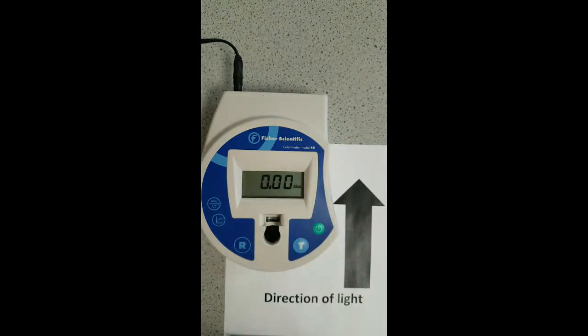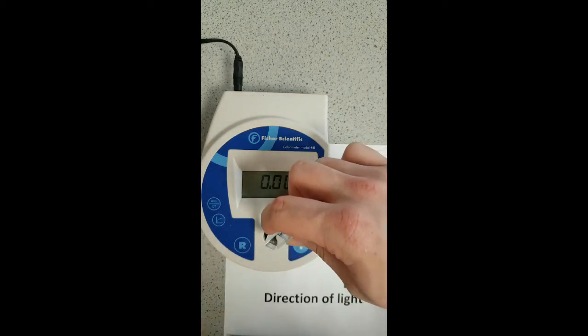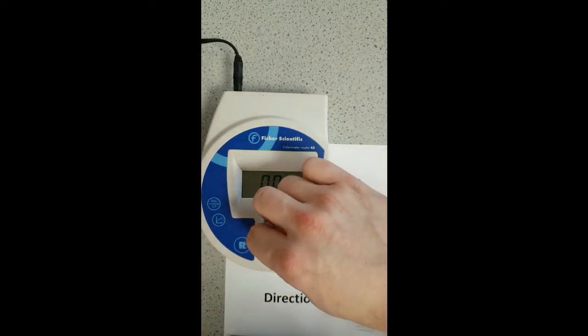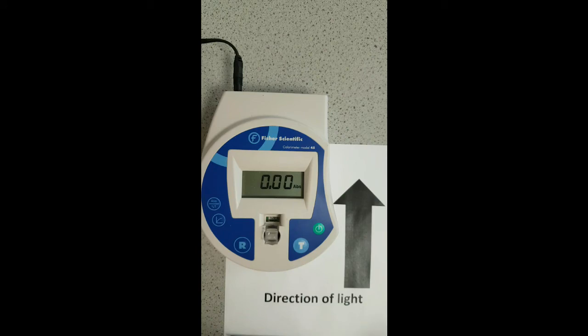Now let's run a reference sample. Remember to make sure that you orientate your cuvette so that the clear windows are facing front to back. Then press R for reference. That gives us an absorbance value of 0, which makes sense because our sample is clear and light is passing straight through. There's no absorbance.